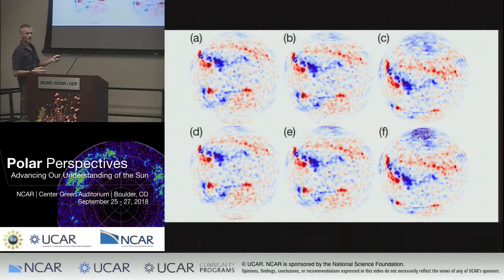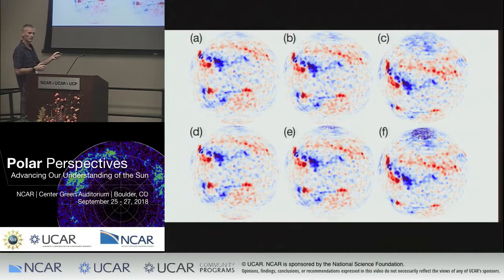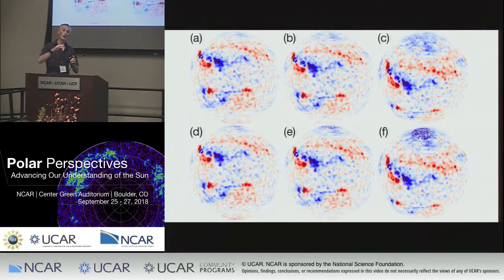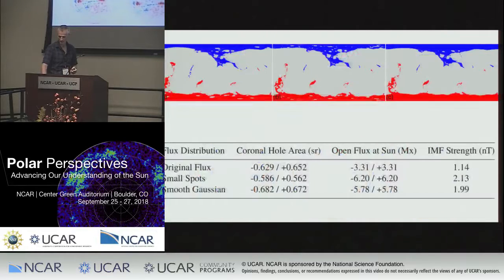If you took a Solar Orbiter trajectory when it was at, say, 30 degrees getting up towards the maximum extent, then this is what you would be able to see. And I think probably at this point, if a structure like this was there, you would be able to see it. If you had something over the poles, obviously it would look like this and there'd be no question that you could see it.